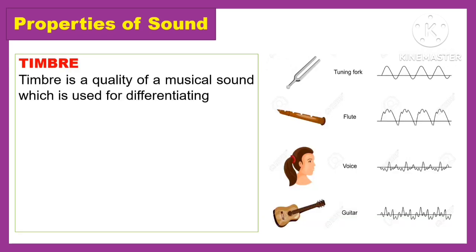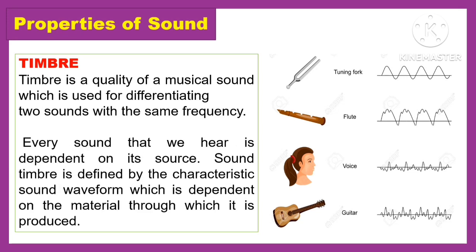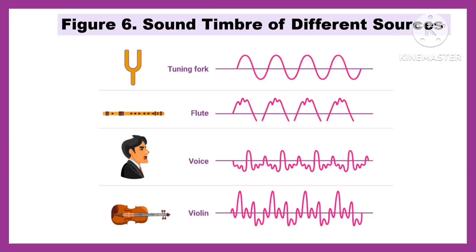Another property of sound is timbre. Timbre is the quality of musical sound, which is used for differentiating two sounds with the same frequency. Every sound that we hear is dependent on its source. Sound timbre is defined by the characteristic sound waveform, which is dependent on the material through which it is produced. The following are the sound timbre of different sources.